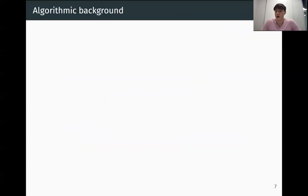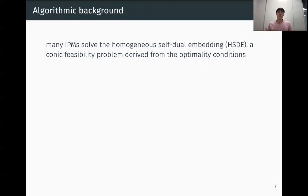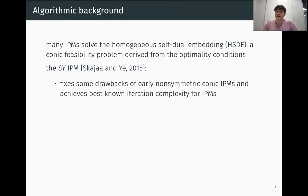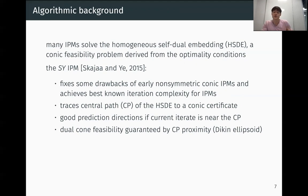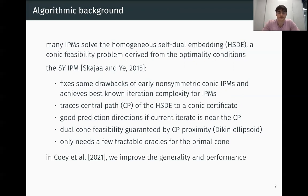Let's look at some of the background for Hypatia's algorithm. Many interior point methods solve the homogeneous self-dual embedding, which is a self-dual conic feasibility problem derived from the optimality conditions. An example of such an IPM is that by Skajaa and Ye from 2015. This algorithm fixes some drawbacks of early non-symmetric conic IPMs. It also achieves the best known iteration complexity for IPMs. The algorithm traces approximately the central path of the homogeneous self-dual embedding down to a conic certificate if one exists. And it relies on an observation by Nesterov that good prediction directions can be obtained if the current iterate is near the central path. It also relies on the fact that dual cone feasibility is guaranteed by central path proximity, so we don't actually need a dual cone feasibility check. And importantly, it only needs a few tractable oracles for the primal cone. We don't need dual oracles.